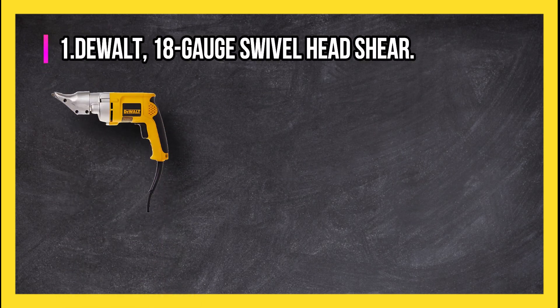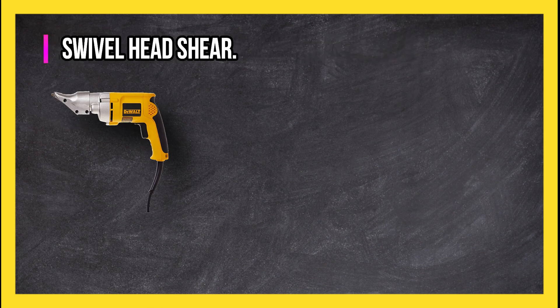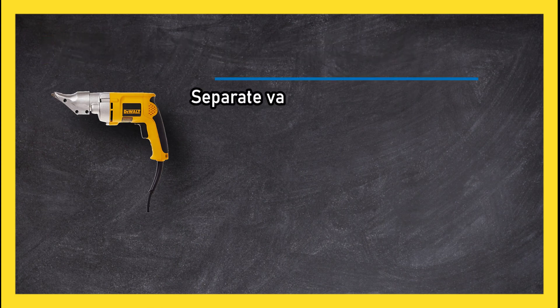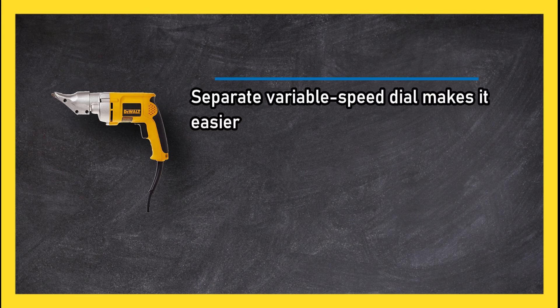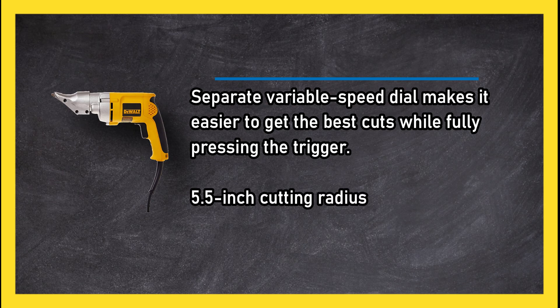At number one: DeWalt 18 Gauge Swivel Head Shear. Separate variable speed dial makes it easier to get the best cuts while fully pressing the trigger. 5.5 inch cutting radius is smaller than other options for sharper turns.